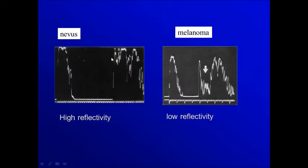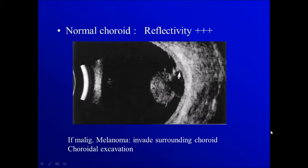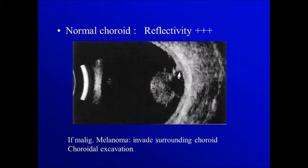Simply, if you have high reflectivity, then you have interfaces. If you have low reflectivity, then you don't have interfaces in the lesion. In choroidal melanoma, if there is invasion of the cells into the surrounding choroid, we will have an area where the reflectivity becomes less and less. The normal choroid is highly reflective because it is formed of different blood vessels, but the mass of cells gives low reflectivity — this produces what we call choroidal excavation.